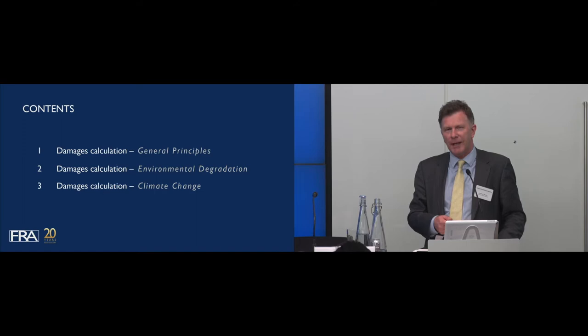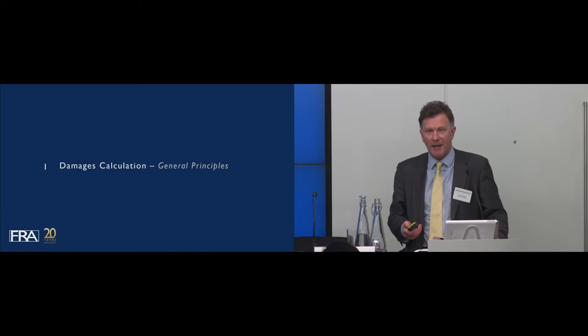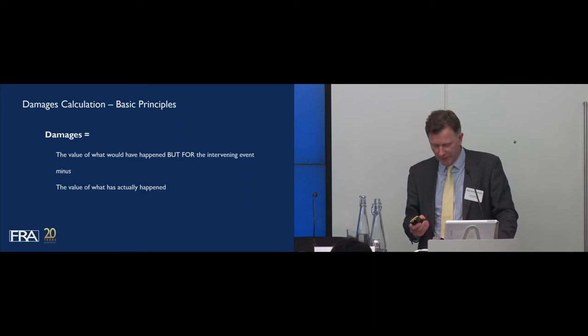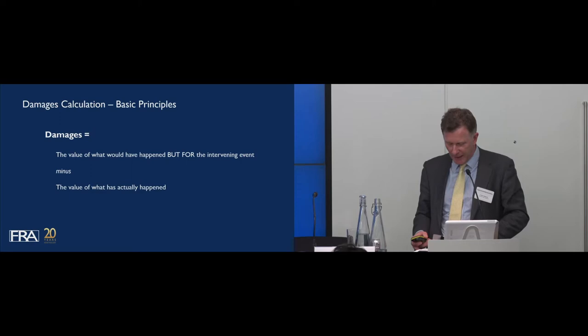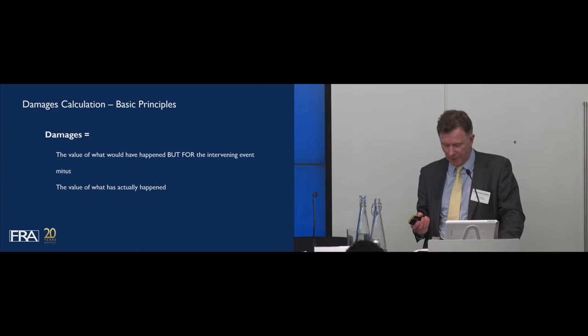Getting to the practicalities of damages calculation: this is a basic outline of any economic damage claim, the same as often in breach of contract claims. What one is trying to do is put the claimant back into the position they would have been in had the relevant intervening event not occurred. In the context of environmental degradation claims, the claimant may be claiming for restitution of the position existing before the damage — for example, cleaning up a river or lake before chemicals were poured in and killed the fish — or claiming for damages and loss of profits.